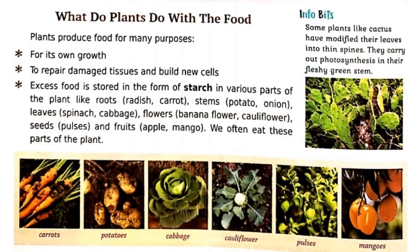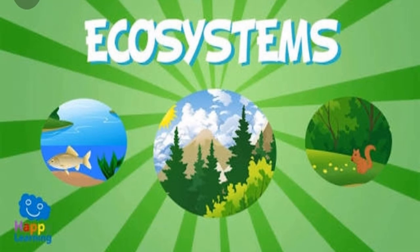Some plants like cactus have modified their leaves into spines and carry out photosynthesis in their fleshy green stem. You can see examples here of how plants make use of their food. Now we come to the next topic, which is the ecosystem. Let us learn about ecology.